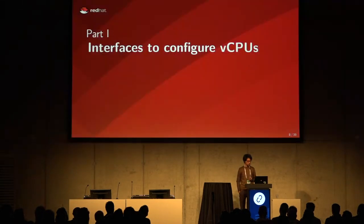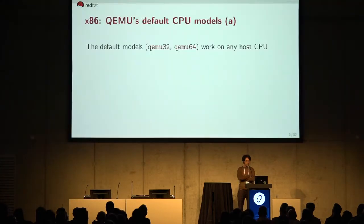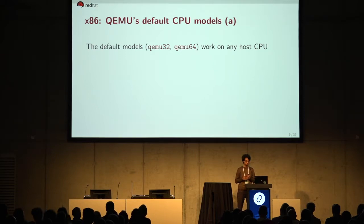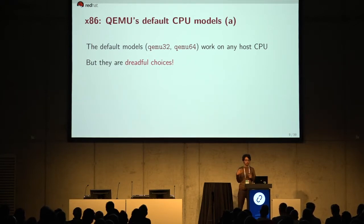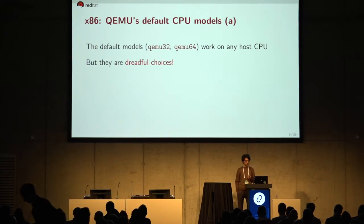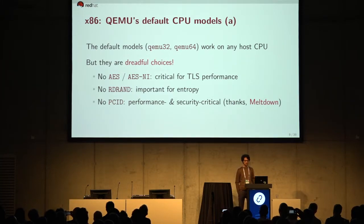Now let's look at interfaces that QEMU and libvirt provide to configure virtual machines. The default guest CPU models provided by QEMU are designed to work on any host CPU, but they're not the ideal choice in production. They lack several CPU instructions critical for initializing entropy for your guests, flags like PCID that are critical for performance and security thanks to Meltdown, and the AES instruction set critical for TLS performance. The default models are really awful for production use.